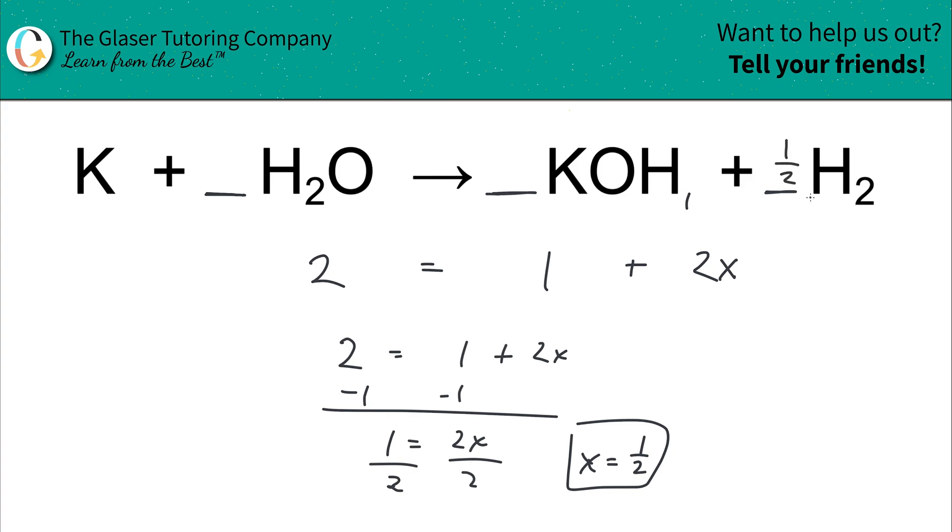So now this is going to be a one half. Now technically everything is balanced, but you're not finished, and the reason being is because you can't have fractional coefficients. But the reason why the fraction is going to help you is because now it's going to tell you whatever the denominator is of your fraction will tell you what you need to multiply all of the coefficients by. Remember, if there's nothing there, it's an invisible one.